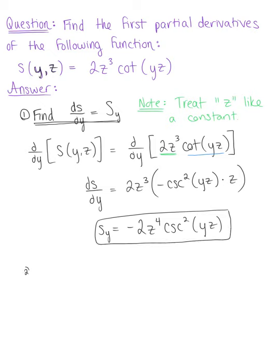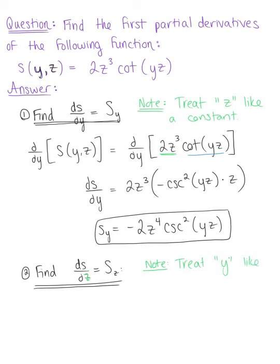Now very similarly, we want to find the second first-order partial derivative, ds/dz — alternatively written as s sub z. Just as we did before, since we are differentiating with respect to z, we're going to treat y like a constant, a real number.